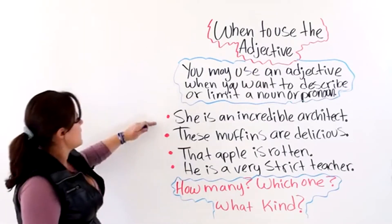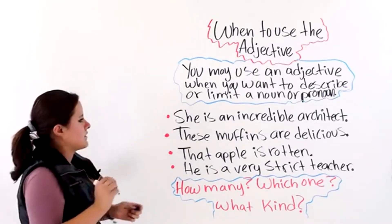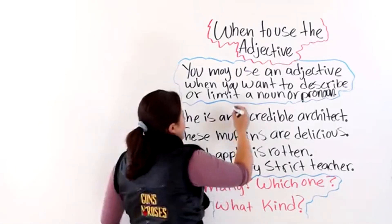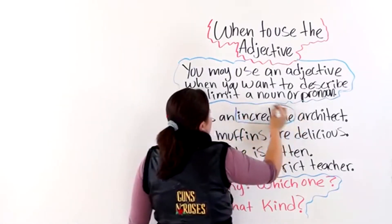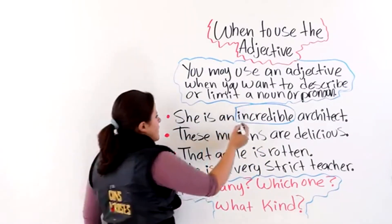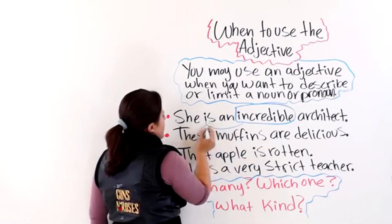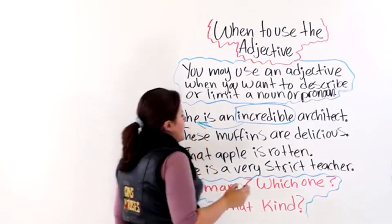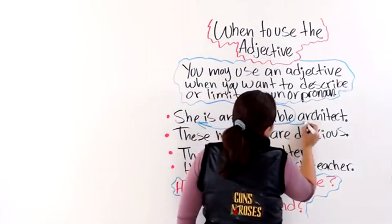Alright, the first one says, she is an incredible architect. Incredible is an adjective that is describing this pronoun and this noun.